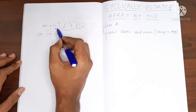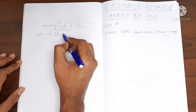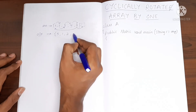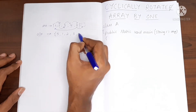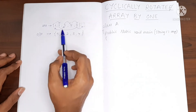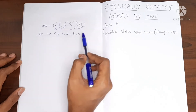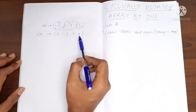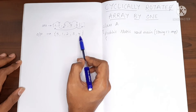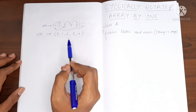So our output will look something like this: 5 has come here, 1 has moved to the next location. So it is 5, 1, 2, 3 and 4. All the values have moved by a distance of 1, and the value which is at the end moves to the beginning of the array.